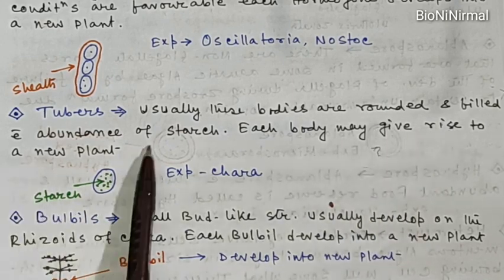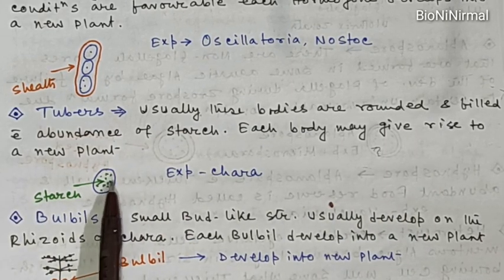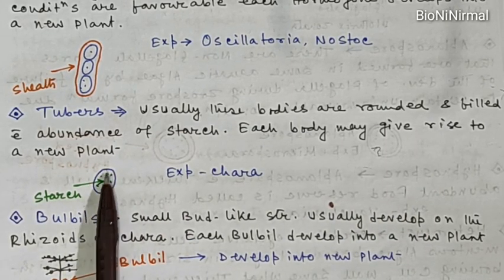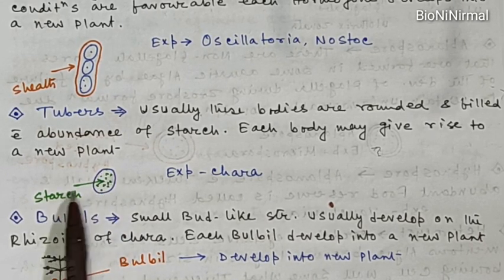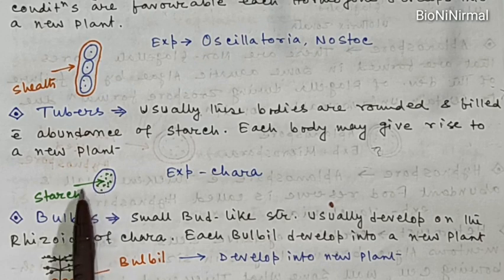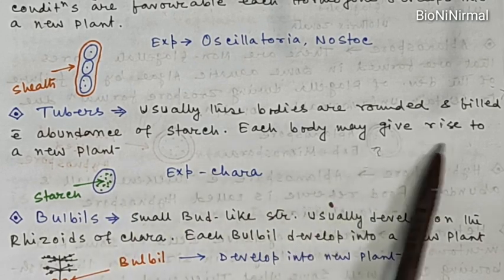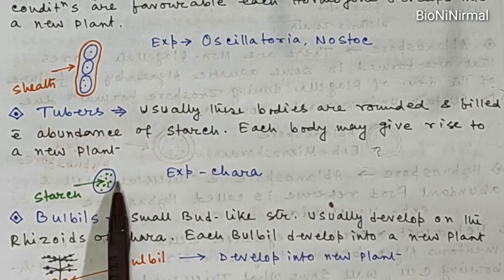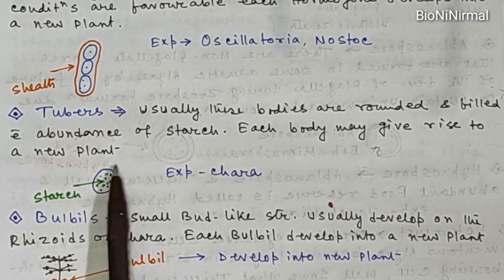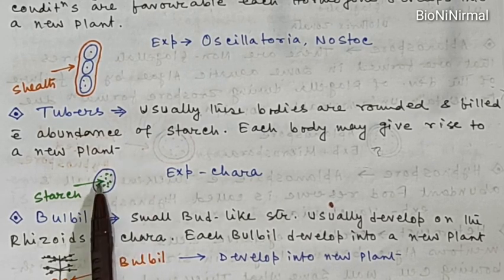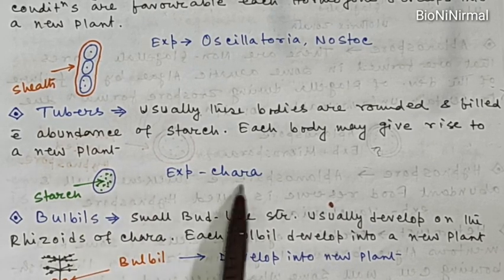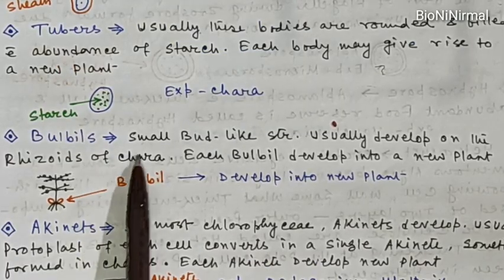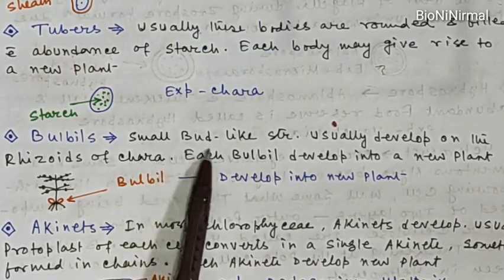Next is tubers. Tubers are usually rounded bodies filled with abundant starch. You can see this round structure which stores food material as starch. Each body may give rise to a new plant. Example: Chara.